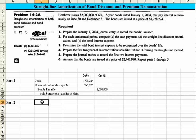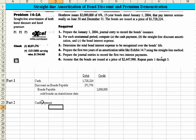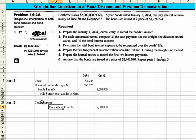How do we calculate the cash payment? The cash payment is going to be equal to the face value of the bonds. We know that's equal to $2 million. Then we need to know the interest rate, and we know the stated rate is 6%.